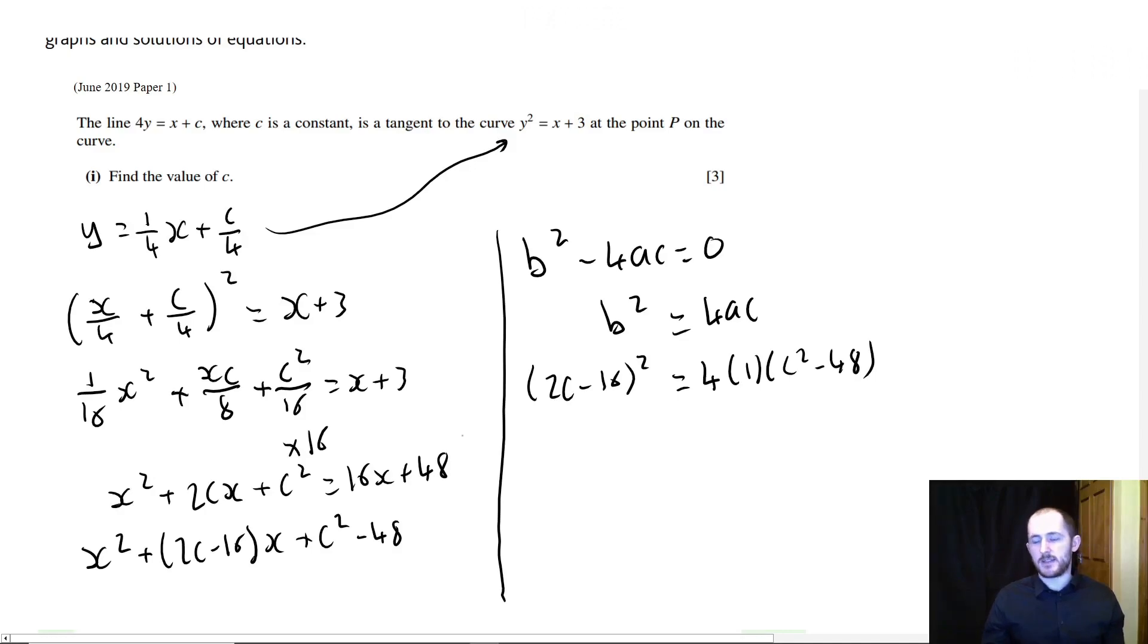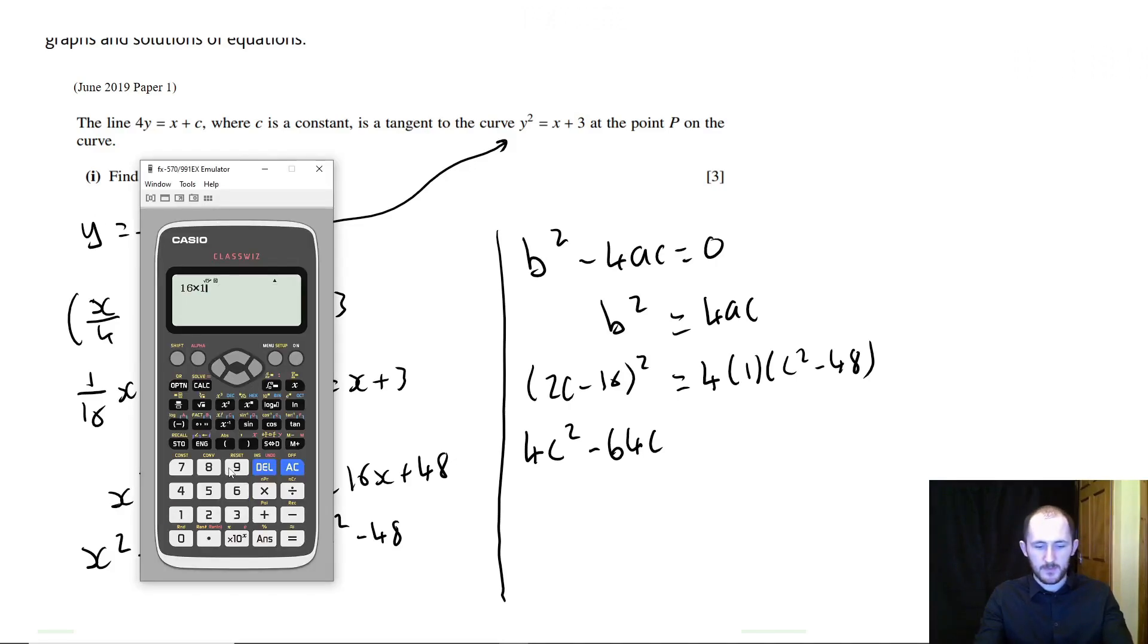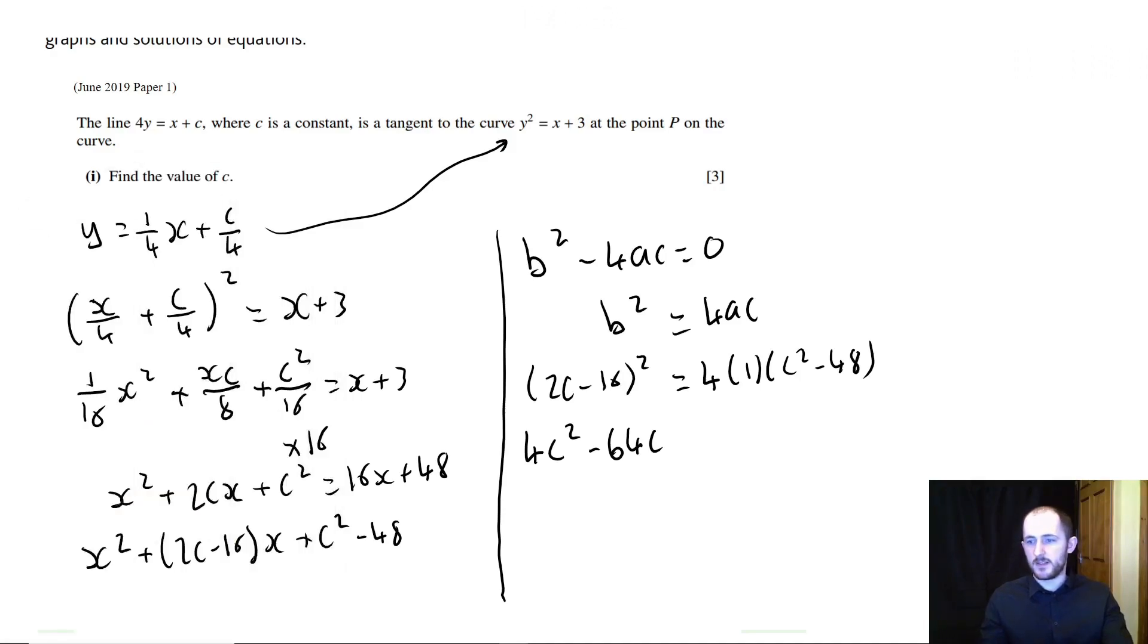And here you can start using calculators. It's completely fine. 4c squared minus 32 minus 32, so minus 64c, and then plus, you know what? I draw the line when it gets to the 16 times tables. Let's do 16 multiplied by 16, which is 256. 256 equals 4c squared minus 192.